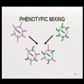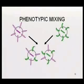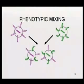These defective interfering particles are genetic mutants with altered genomes, but they only survive because they can get complementation — or one-way complementation — from their helper viruses.